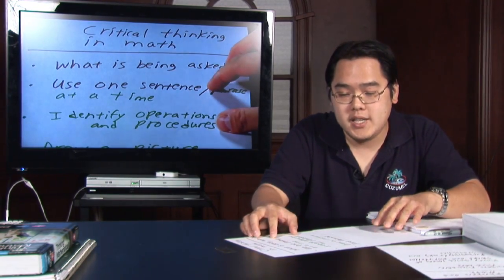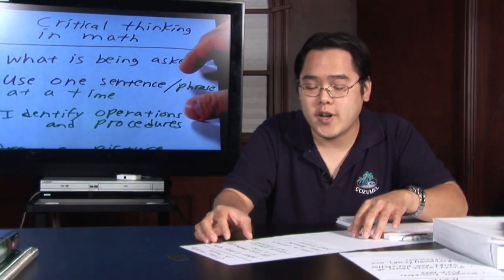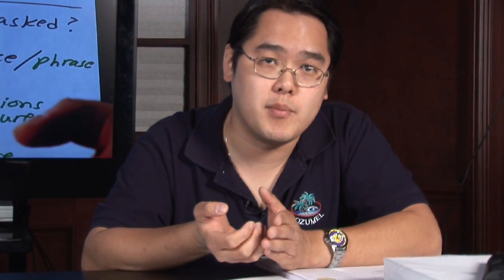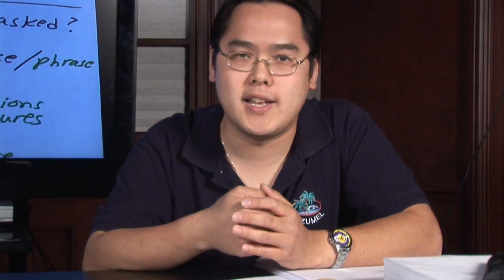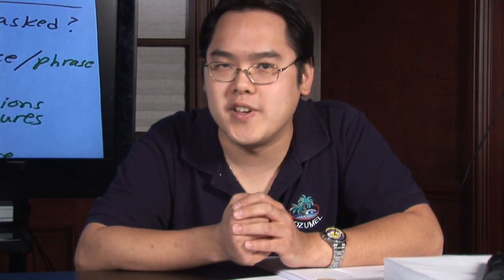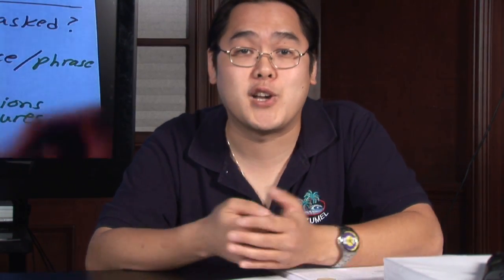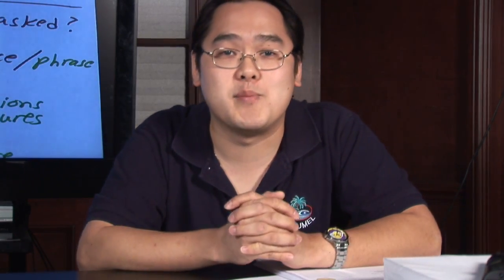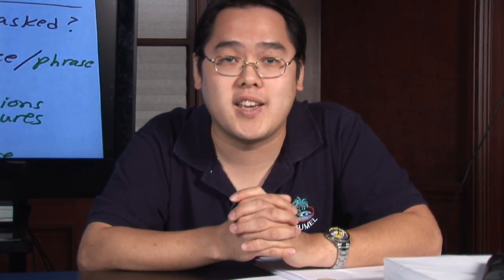And last but not least, once you find your formulas and draw a picture and you solve the equations, it's always important to check your answers. For example, if you want to find the width of a room and you happen to get a negative number, it doesn't make sense to say that your room is negative 12 feet wide. So be sure that you check your answers to make sure that the numbers make sense. I'm Jimmy Chang and this has been how to use critical thinking in mathematics.